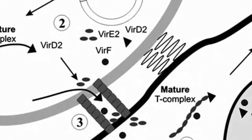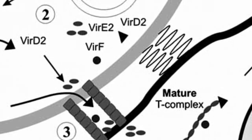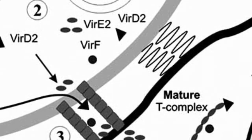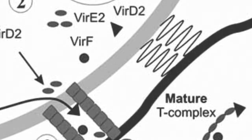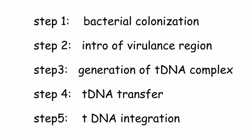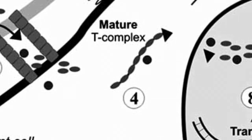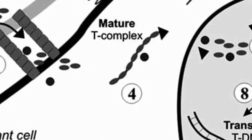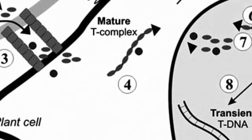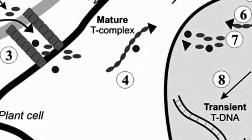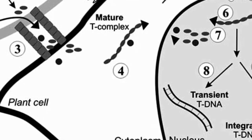Step 4 - T-DNA transfer: VirE2 is a protein used for coating the T-DNA complex. Coating is important because it assists transfer to the nuclear membrane for smooth transfer of T-DNA into the host cell, and also reduces the size of the complex. Step 5 - Integration: The T-DNA complex is transferred to plant cells where it integrates into nuclear DNA, is transcribed by the cells, and causes crown gall disease in plants.